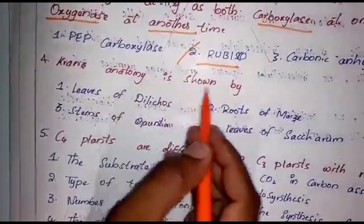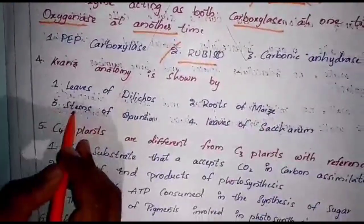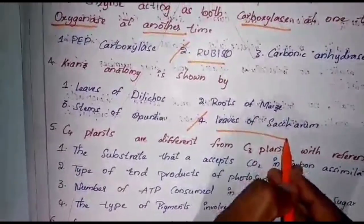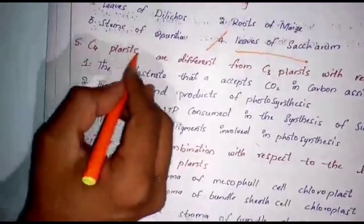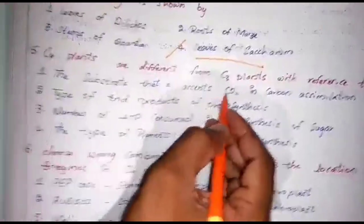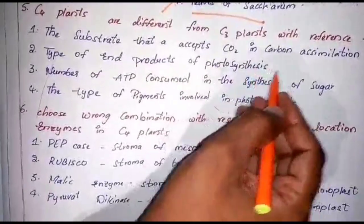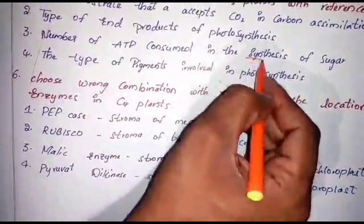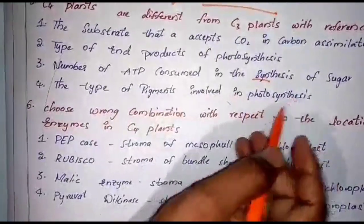The fourth question: Kranz anatomy is shown by which option? Leaves of Dolichos, roots of maize, stem of Opuntia, or leaves of Saccharum. Leaves of Saccharum — all tropical and subtropical plant species have Kranz anatomy, including maize plants. The fifth question: C4 plants are different from C3 plants with reference to what? The substrate that accepts carbon dioxide in carbon assimilation — option one is correct, since end products are the same (starch) and pigments are the same.